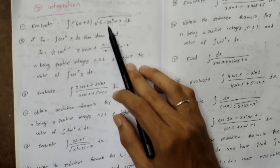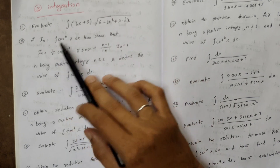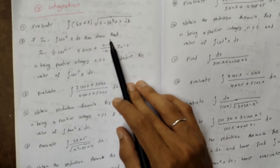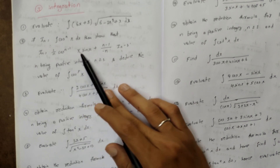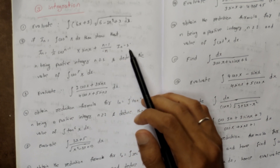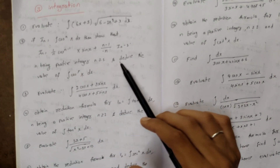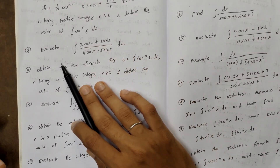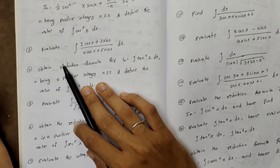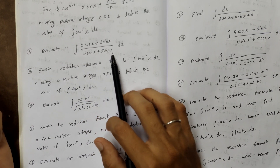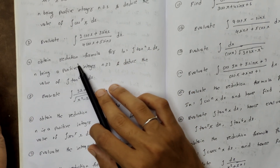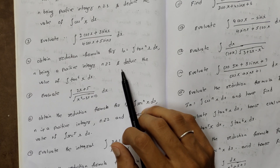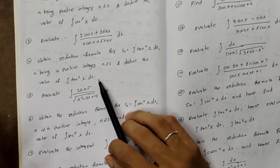If Iₙ = ∫cosⁿx dx, show that Iₙ = (1/n)cosⁿ⁻¹x·sinx + ((n-1)/n)·Iₙ₋₂, where n is a positive integer ≥2, and deduce the value of ∫cos⁵x dx. Evaluate ∫(2cosx+3sinx)/(4cosx+5sinx) dx. Obtain the reduction formula for Iₙ = ∫tanⁿx dx, n being a positive integer ≥2, and deduce ∫tan⁶x dx.